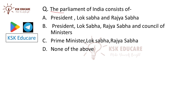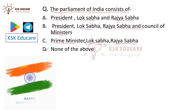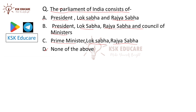The first question is: The Parliament of India consists of? Option A is the President, the People of India, and the Council of Ministers. Option B is the Prime Minister and the People of India. Option C is none of the above. The correct answer is Option A.